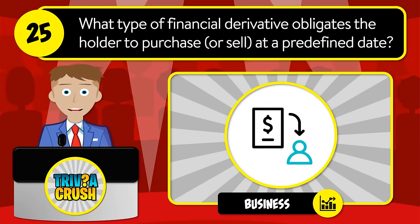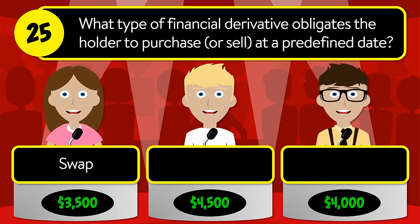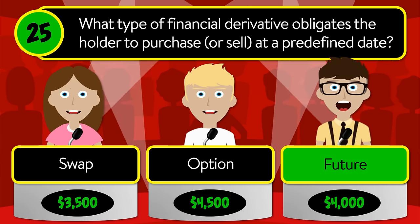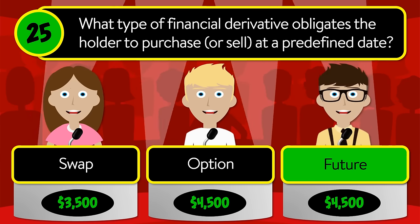Question number twenty-five: what type of financial derivative obligates the holder to purchase or sell at a predefined date? Is it swap, option, or future? The correct answer is future.